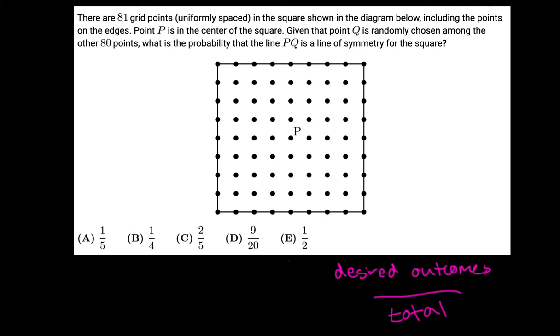So the number of total possible outcomes they're telling us here is 80, because they're saying that there are 80 other points that point Q will be placed among. So your answer will be out of 80.